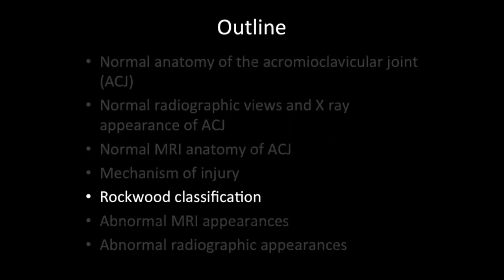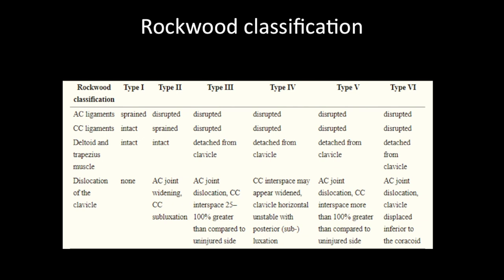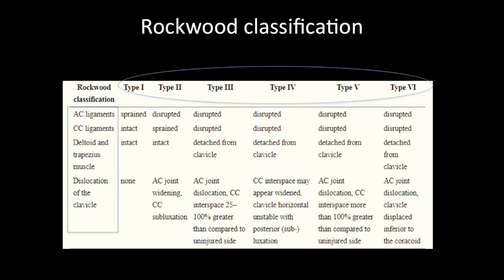Now let's look at the Rockwood classification — this is the crux of MRI reporting in AC joint injury. If you understand the classification well, the entire reporting becomes easy. There are six types of AC joint injuries, predominantly classified based on four things: AC ligaments, CC ligaments, deltoid and trapezius muscles, and the direction of clavicle dislocation. The most important structure in this entire classification is the coracoclavicular ligament.